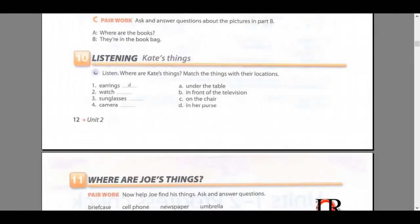Page 12, Exercise 10, Listening: Kate's Things. Listen. Where are Kate's things? Match the things with their locations. Where are my earrings? Are they on the table? No. Oh, here they are, in my purse. Now, where's my watch? It's not in my purse. Where? There it is, in front of the television. Oh, of course. Thanks, Joe. Let's see, my sunglasses. Where are they? Next to my watch? No. Are they behind your purse? No, they aren't. Oh, they're on the chair. Great. Now I just need one more thing, my camera. Maybe it's on the table. No, it's not. It's under the table.